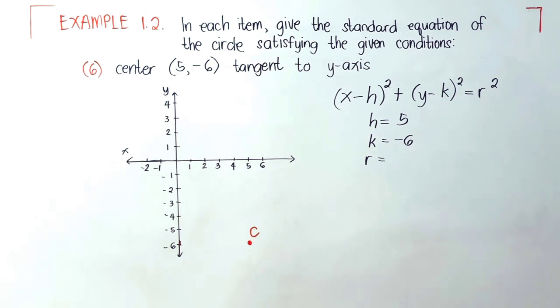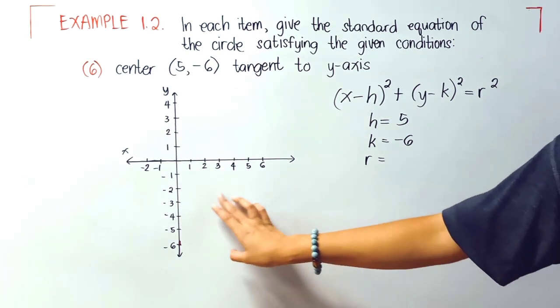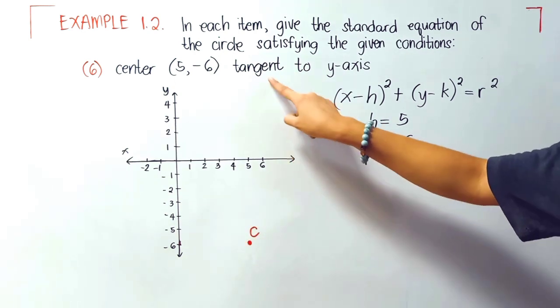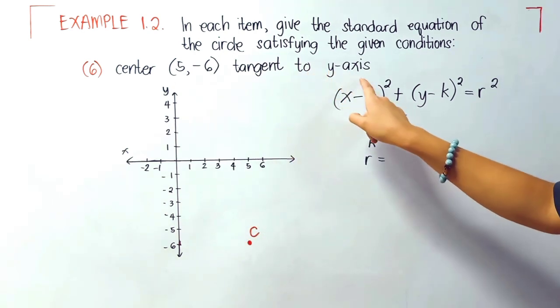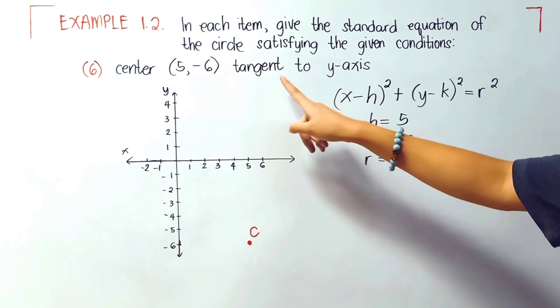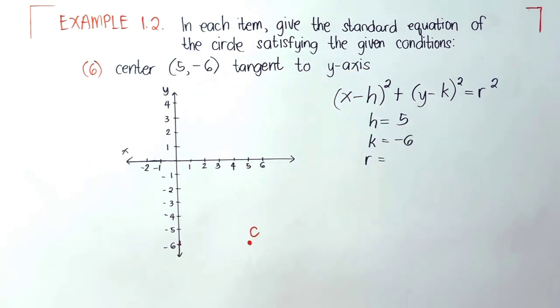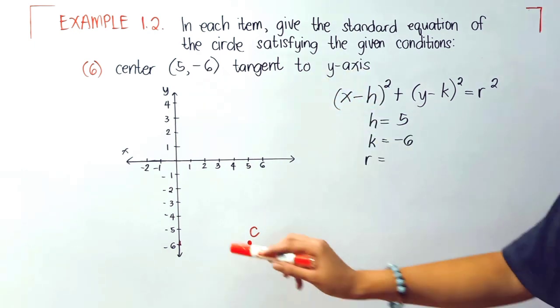Now our r is still unknown. Since we have the center here, therefore our circle is in this portion. When you say tangent to the y-axis, our circle here touches the y-axis in one point.